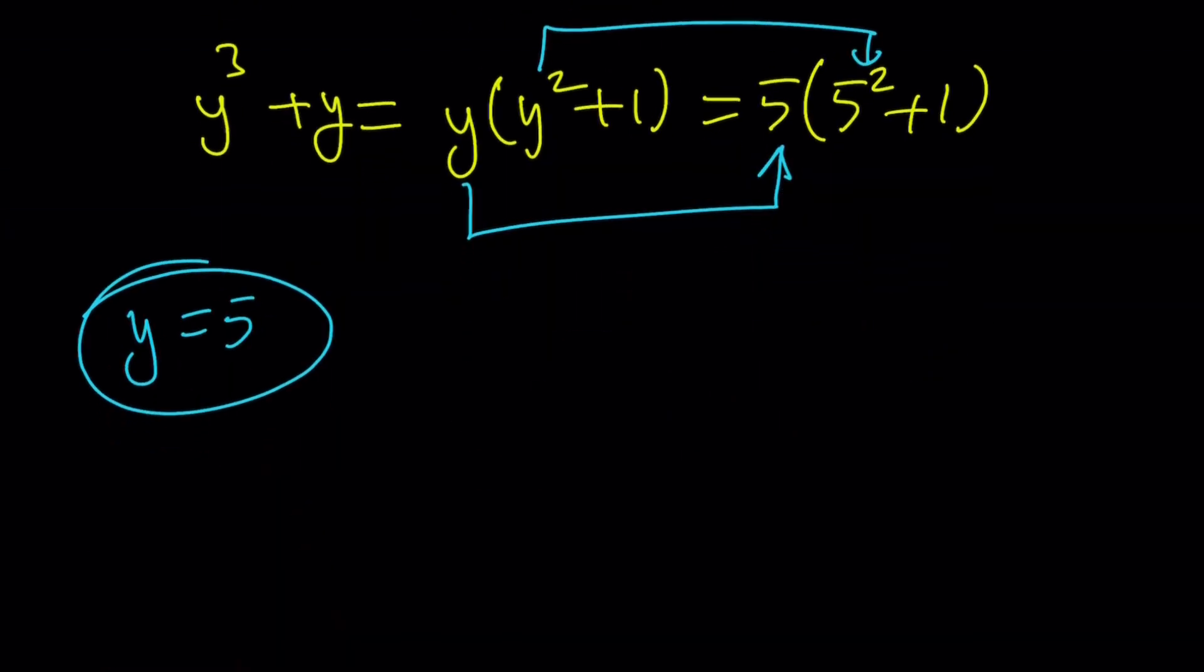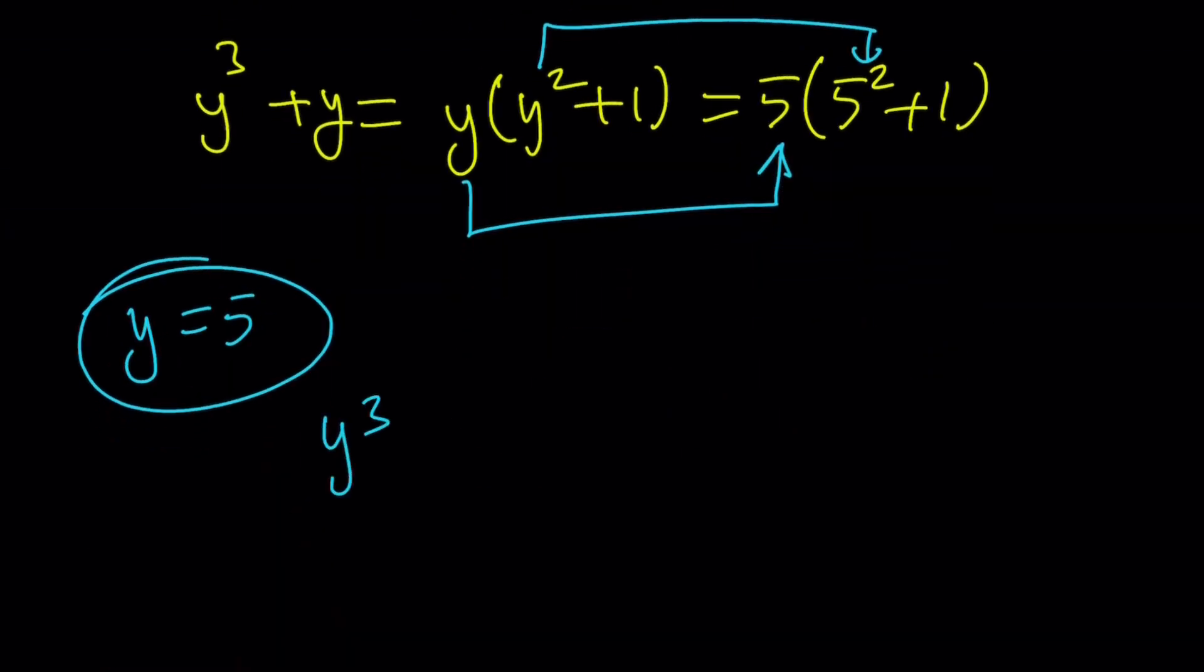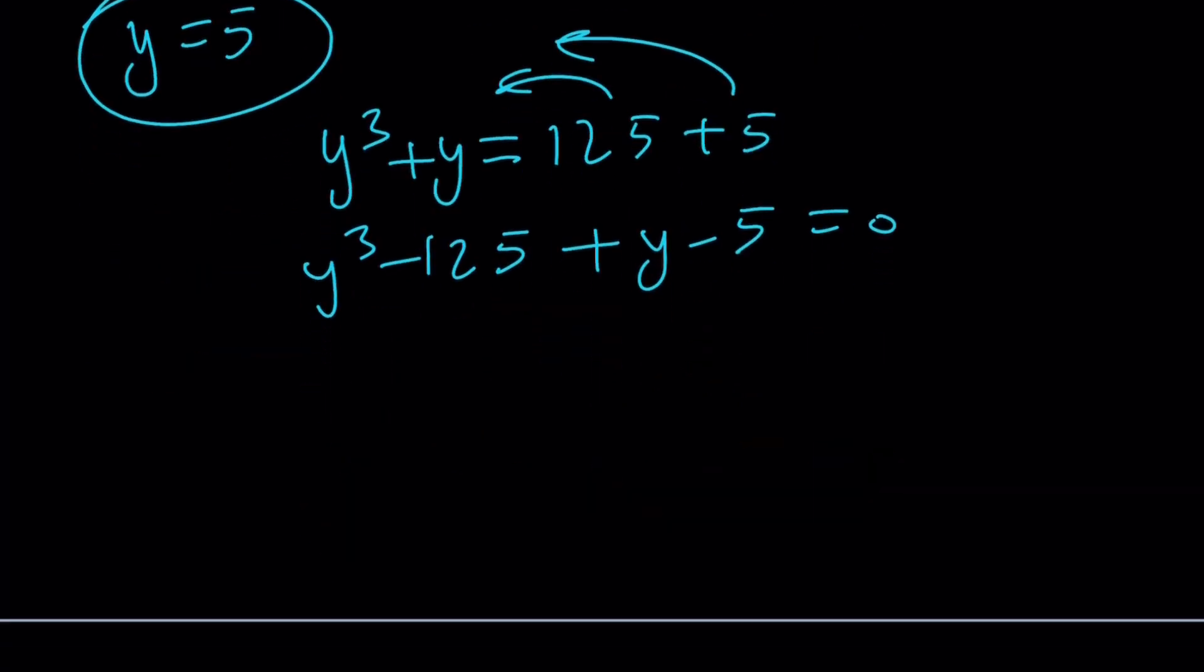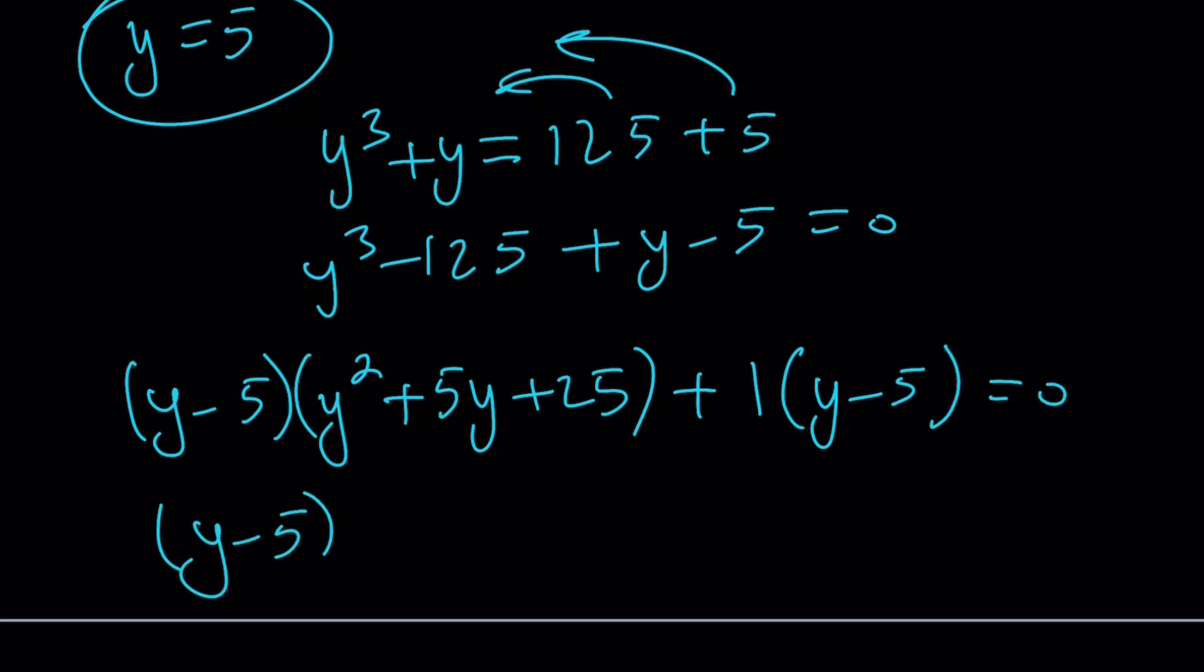How do you find the other solutions? By considering the following, if you go ahead and write this as y cubed plus y equals 125 plus 5, and then bring those over here, y cubed minus 125 plus y minus 5 equals 0. And then you can factor this by grouping y minus 5. That is going to be a difference of two cubes. Remember the formula? y squared plus 5y plus 25. And then the second piece is just one times that. And now we have a common factor, which is y minus 5, which also indicates that y equals 5 is a solution. We already talked about it. And the other factor is going to be y squared plus 5y plus 25 plus 1, which means plus 26. Here we go.